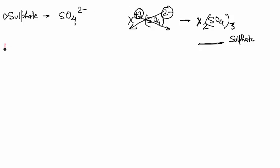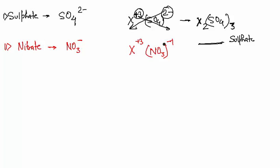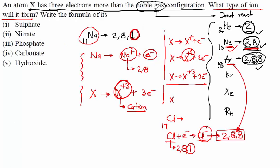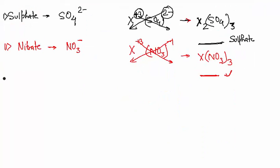The next one is nitrate. Nitrate is NO₃⁻. We have X³⁺ and NO₃⁻ (charge −1). Cross multiplying: X has charge 3, NO₃ has charge 1, so the formula is X(NO₃)₃. The name is the element name followed by nitrate.